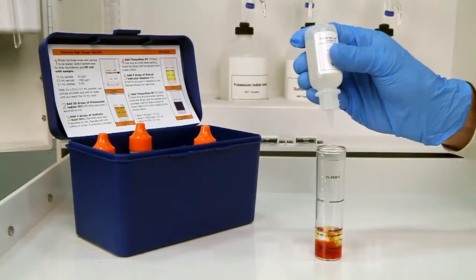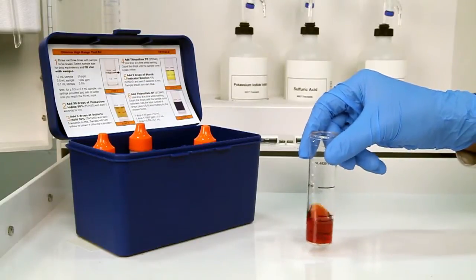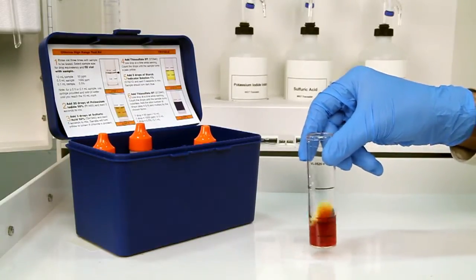After the addition of each reagent, swirl the vial five seconds to make sure the reagents are properly mixed. The sample will turn yellow or brown if chlorine is present.